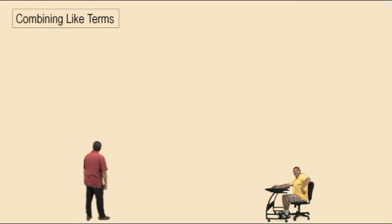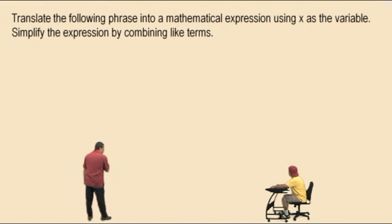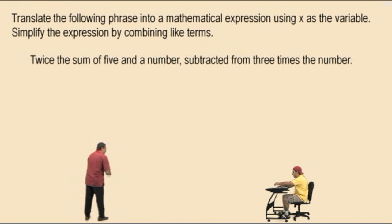First, we're going to translate a word statement into a mathematical expression. So here we go. Translate the following phrase into a mathematical expression using x as the variable. Simplify the expression by combining like terms. We just can't get away from this, but that's okay. We've got to practice. So here we go Charlie. Here's our first problem. Twice the sum of 5 and a number subtracted from 3 times the number.